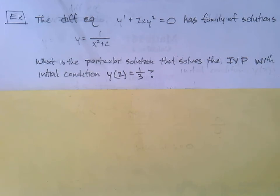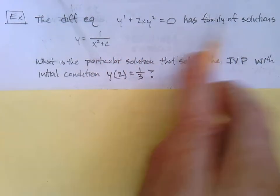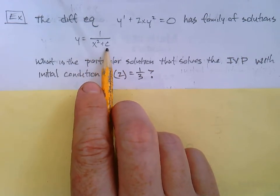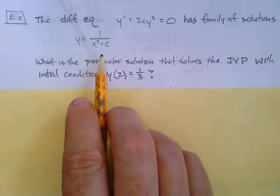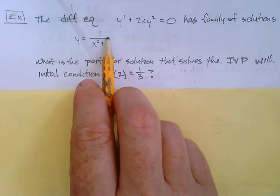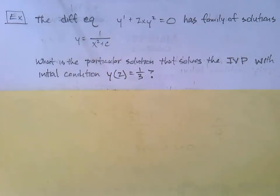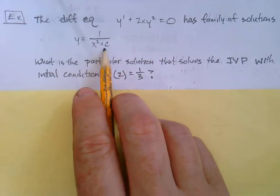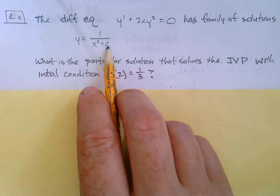Here's our IVP example. The differential equation y prime plus 2xy squared equals zero has the family of solutions y equals 1 over x squared plus c. We know it's a family because there's an arbitrary constant. You could put any constant value there and that would give you another solution to this differential equation. All of those together — with every value of c — make up the family.